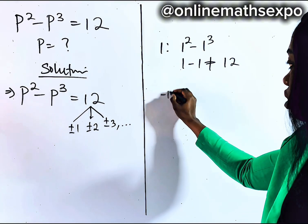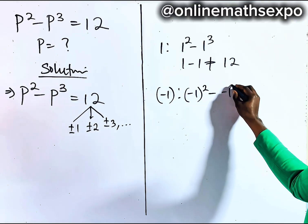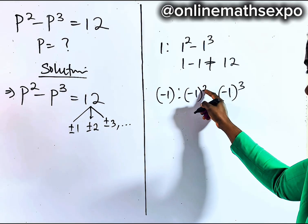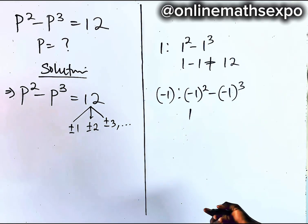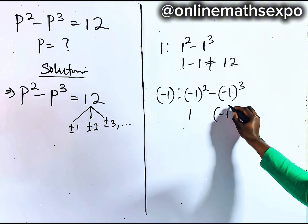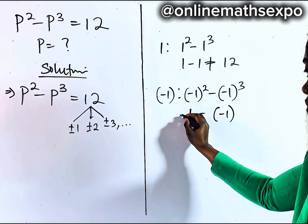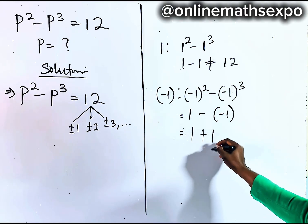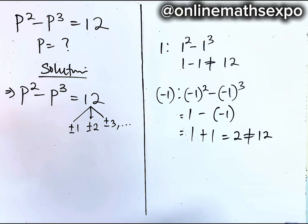We also test for negative one. Negative one squared minus negative one cubed. Whenever you square a negative, it gives you a positive, so we have positive one. And whenever you cube a negative, it returns you to negative. If you simplify this, it gives you one plus one, which gives you two — not equal to 12.